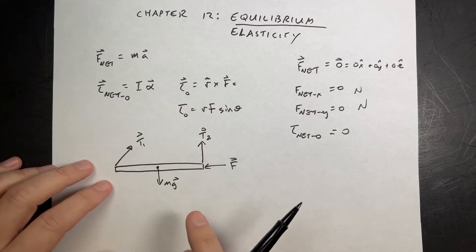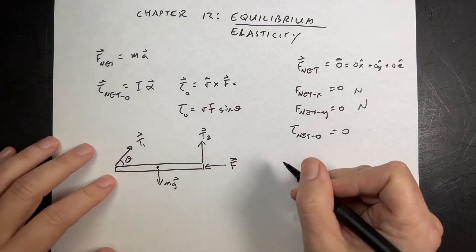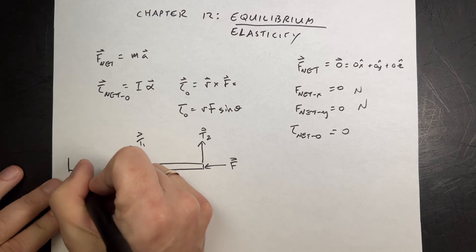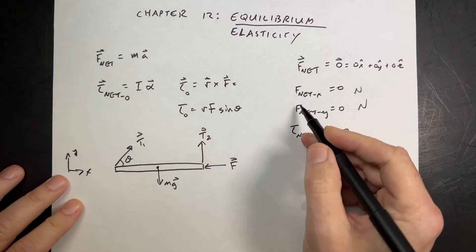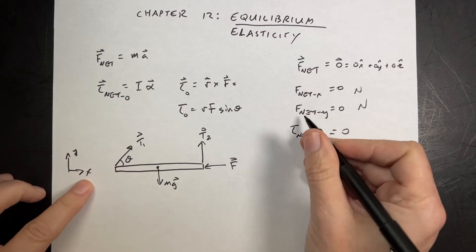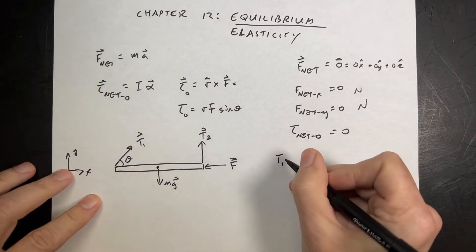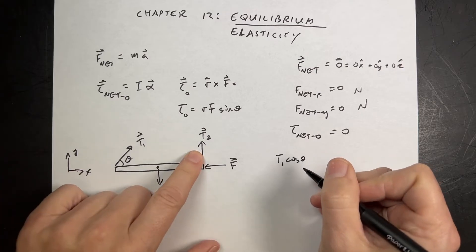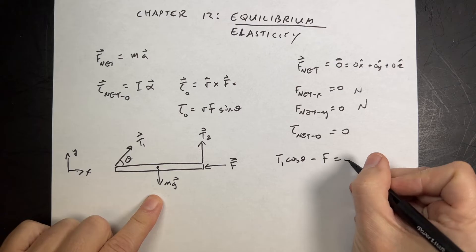So if I want to calculate the net force here, let's say this is at some angle theta, just to make things interesting. I could say this is my x-axis, that's my y-axis. And so these two equations, the force equations, x equation, I'd have t1 in the x direction is t1 cosine theta. That has no x component. That has a negative x component, f. And that's it, equals zero.